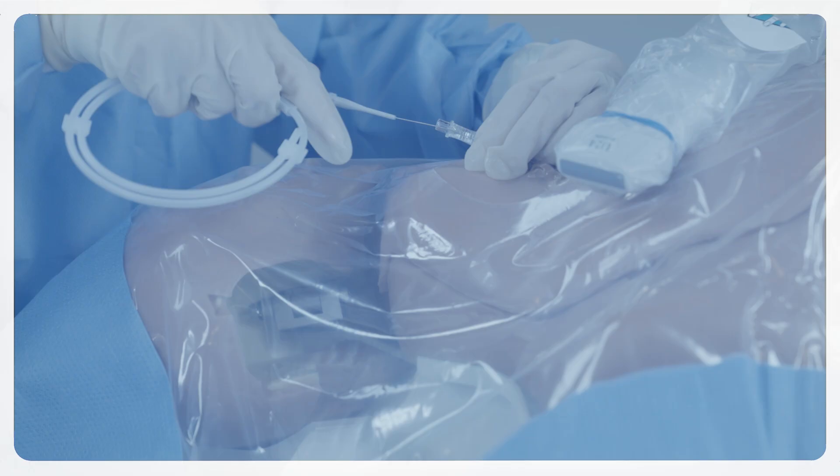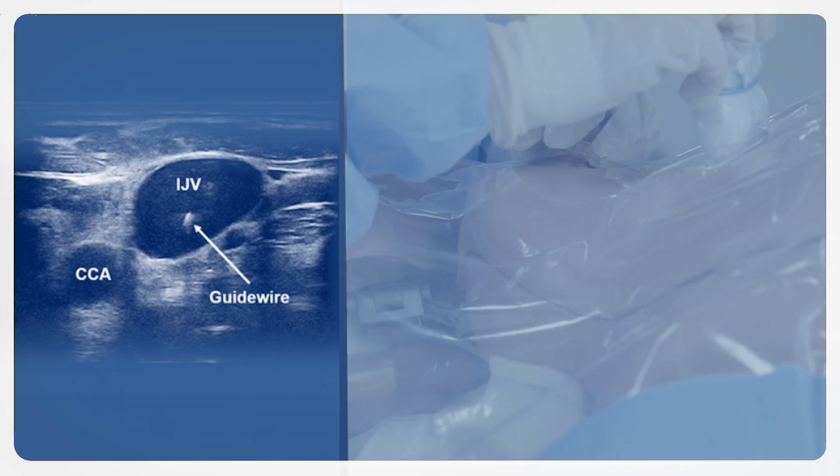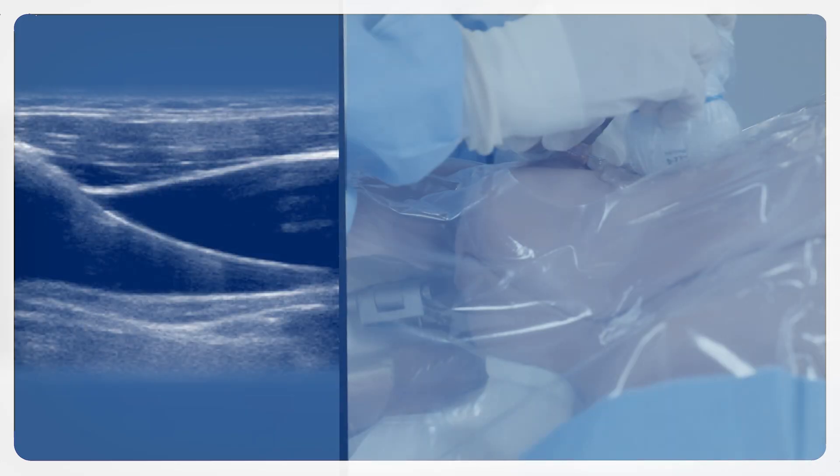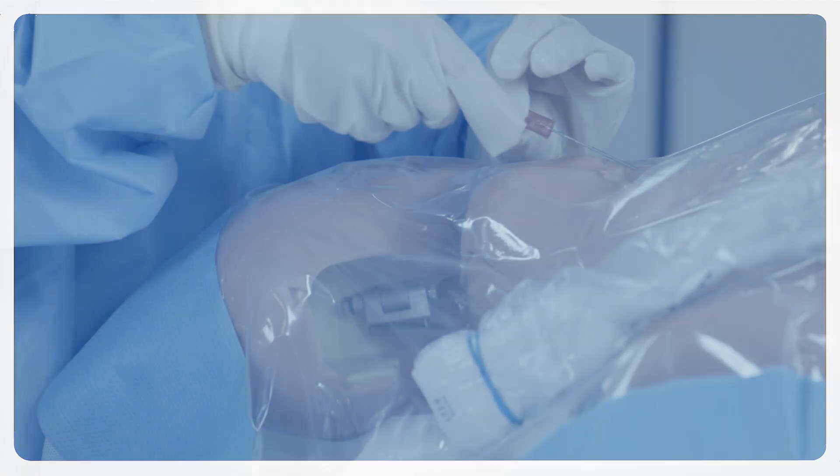The wire should move easily and not meet any resistance. Confirm correct placement of the guide wire under ultrasound in both transverse and longitudinal views. You can also consider confirmation with tubing manometry if available. After confirming the guide wire is in the vessel and it moves back and forth without resistance, you can remove the needle.